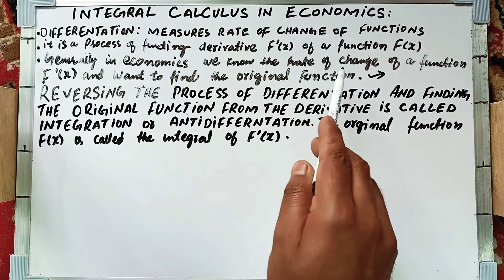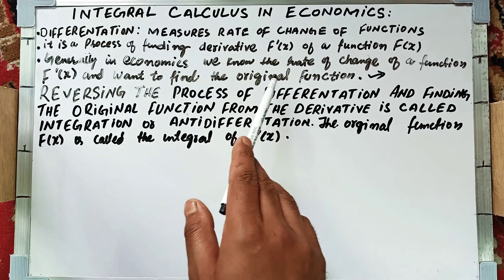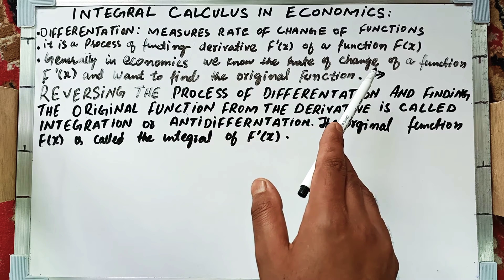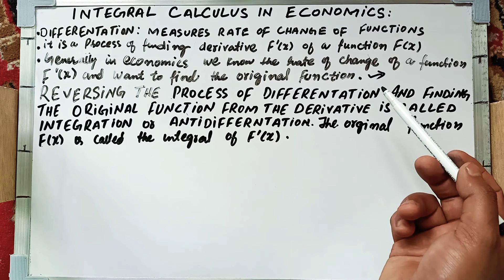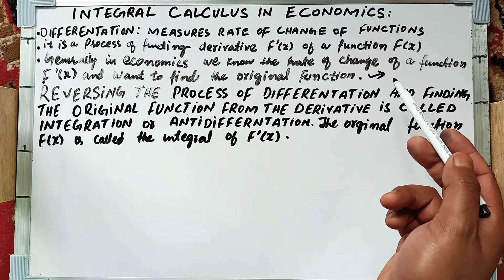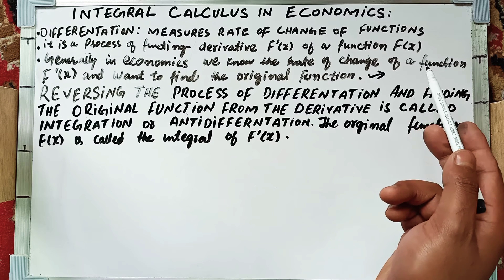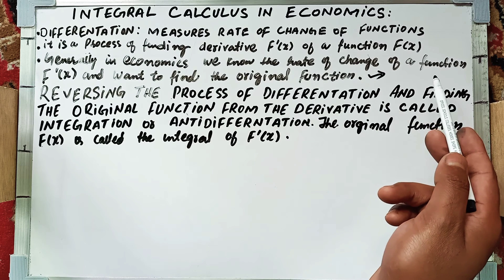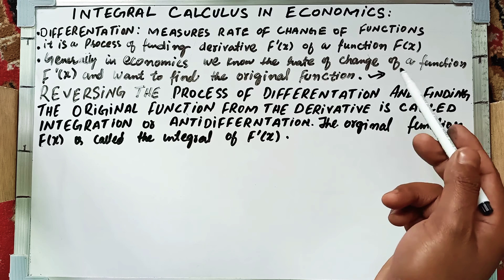Generally in economics, we know rate of change of a function f'(x) and we want to find the original function. That is to say, if I give an example, we know the marginal cost and if we want to find the total cost from the marginal cost, we use integration.